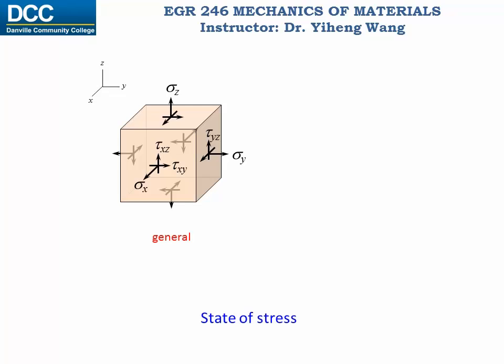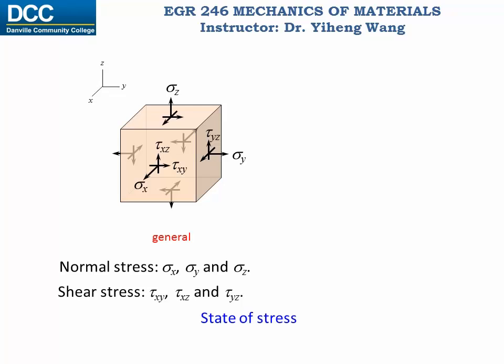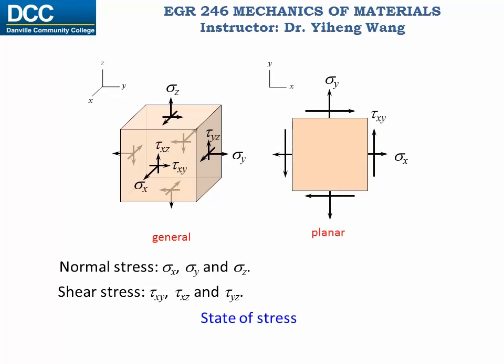Therefore, the general state of stress of a particle can be characterized by six independent stress components. There are three normal stress components along the x, y, and z axes respectively — sigma x, sigma y, and sigma z — and three shear stress components within the xy plane, xz plane, and yz plane respectively. When we reduce our 3D analysis to 2D analysis, focusing on the state of stress within only one plane — in this case the xy plane — there are only three stress components: the two normal stresses along the x and y axes and the shear stress within the xy plane. This is called the planar state of stress.